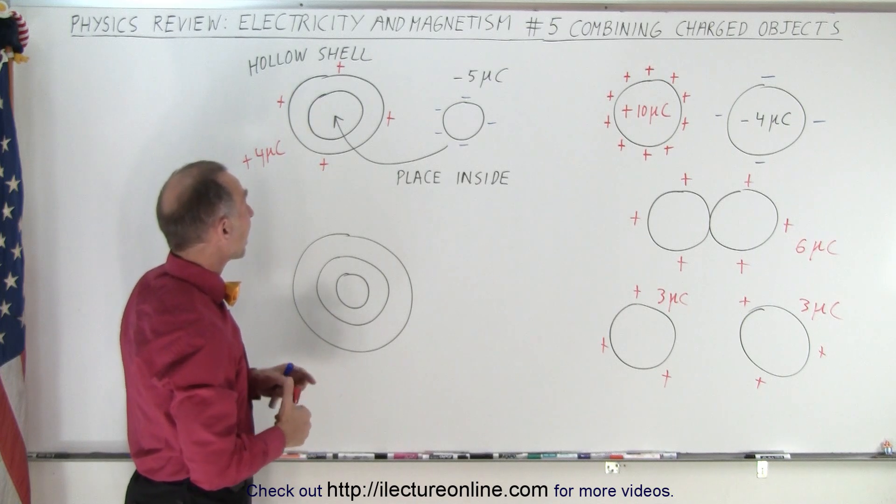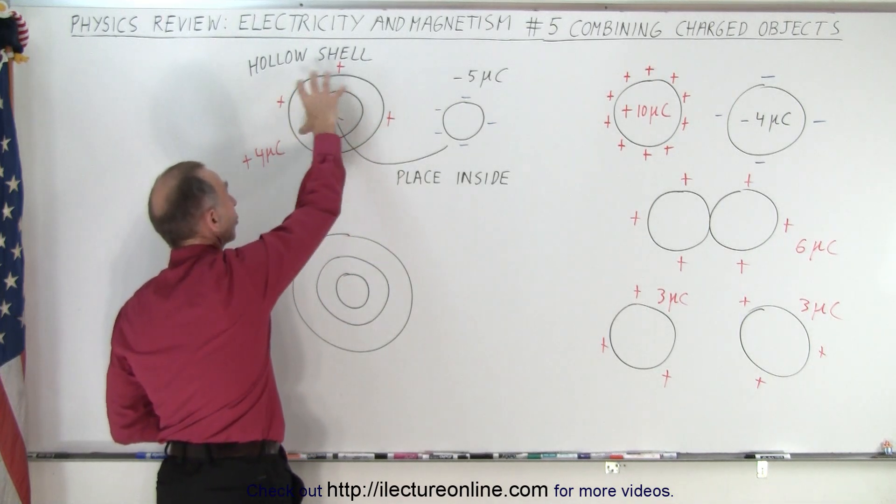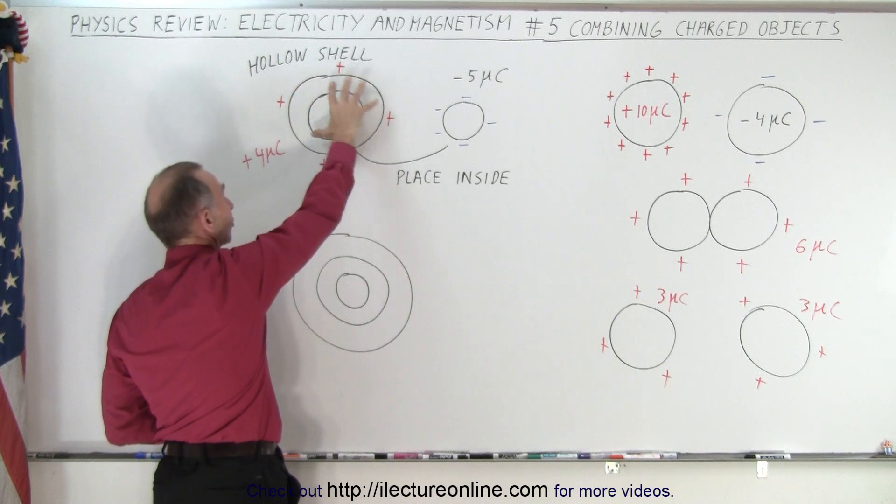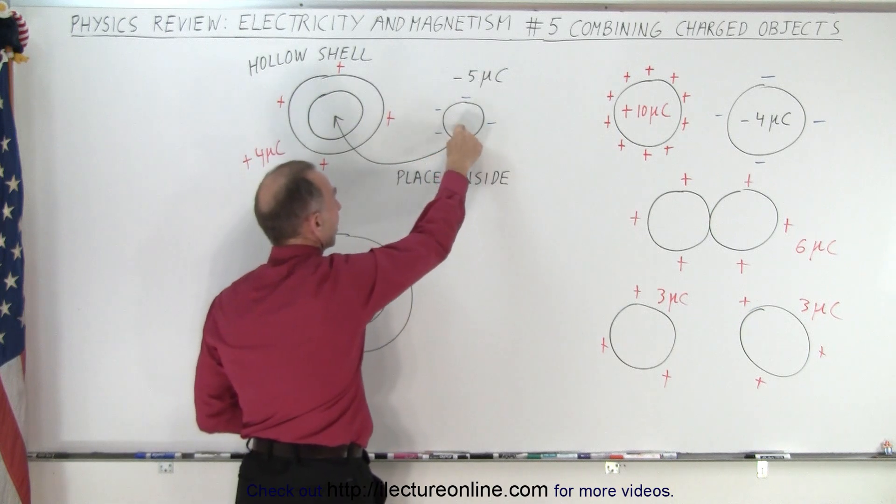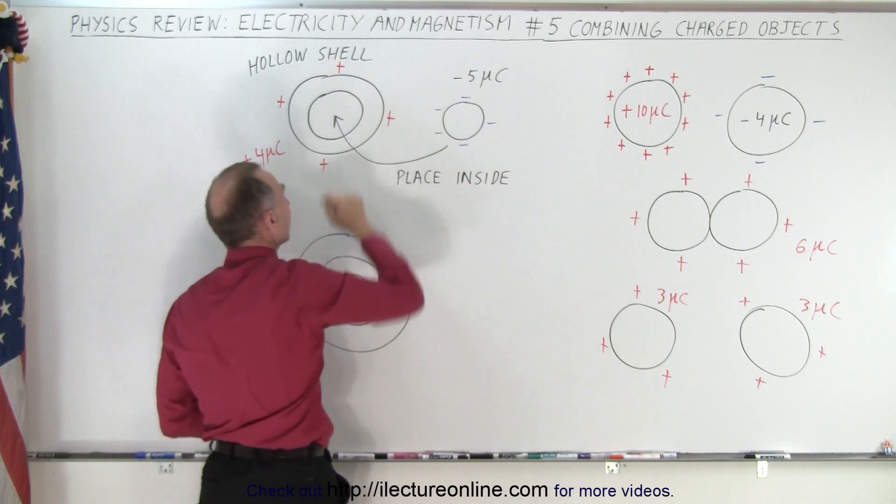So what happens when we have these two objects? We have a hollow shell, so this is conductor metal and there's a hollow inside right here. And we have a smaller object right here which could fit into this big object.